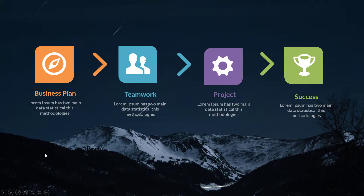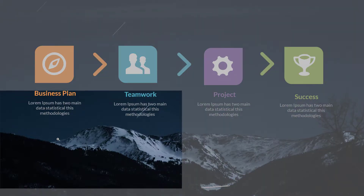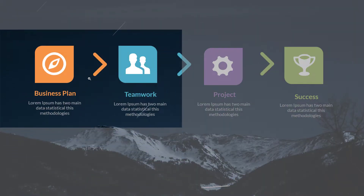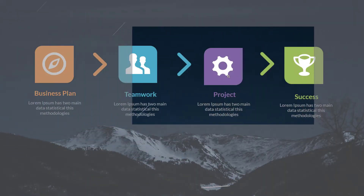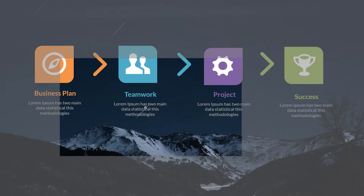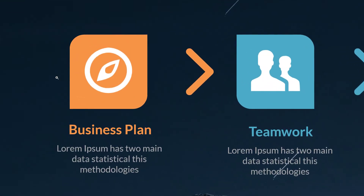Another way of doing this is going down to the magnifying glass, which highlights a certain section of the slide, and you can then zoom in to a particular point.